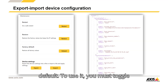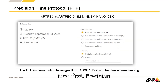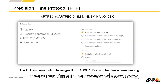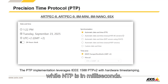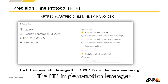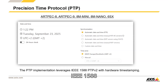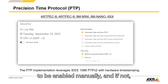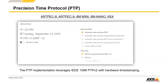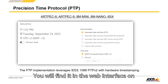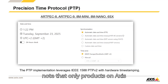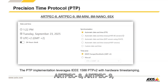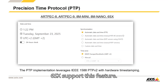To use it, you must toggle it on first. Precision time protocol: PTP measures time in nanoseconds accuracy while NTP is in milliseconds. The PTP implementation leverages IEEE 1588 PTP v2 with hardware timestamping. This feature needs to be enabled manually; if not, NTP is still the default setting. You will find it in the web interface under date and time. Please note that only products on Axis Arcpec 8, Arcpec 9, 8M Mini, 8M Nano, and 6SX support this feature.